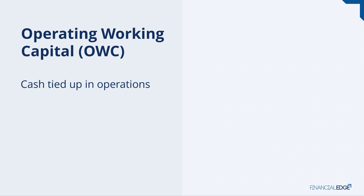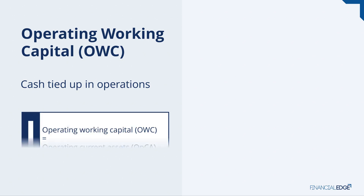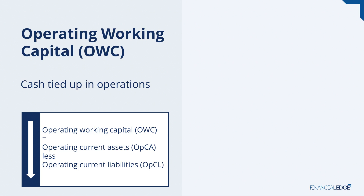How do we calculate operating working capital? Operating working capital, or OWC, equals your operating current assets — such as inventory — less operating current liabilities. So OWC measures funds needed to maintain operations, or cash tied up in operations.